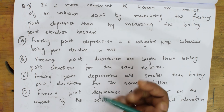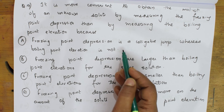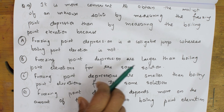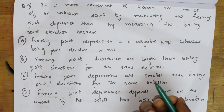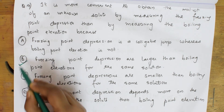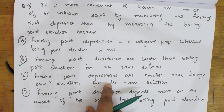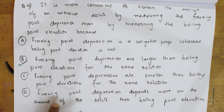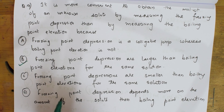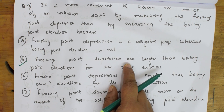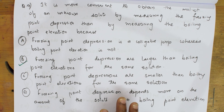Option A says freezing point depression is a qualitative property whereas boiling point elevation is not — wrong, both are colligative properties. Option B says freezing point depressions are larger than boiling point elevations for the same solution — yes, this is correct. Option C says freezing point depressions are smaller — wrong. Option D says it depends more on solute amount — not the key reason. The correct answer is B.